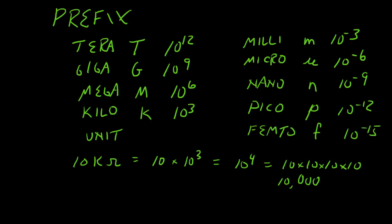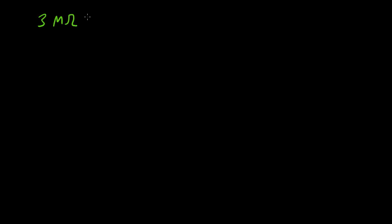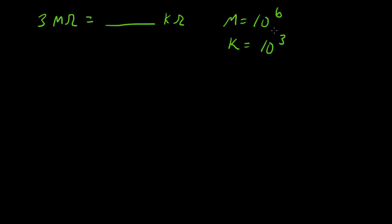Let's talk about converting between prefixes. Say you have 3 mega ohms and you want to express that in kilo ohms. Mega is 10 to the 6th and kilo is 10 to the 3rd, so there's a difference of 3 in the exponents — that means they differ by a factor of 1,000. Since kilos are smaller, 3 mega ohms equals 3,000 kilo ohms.